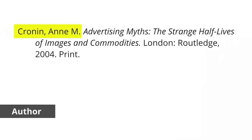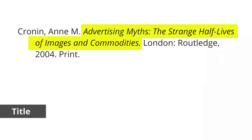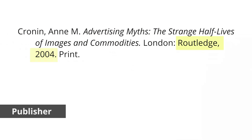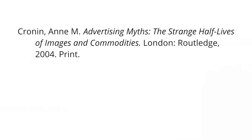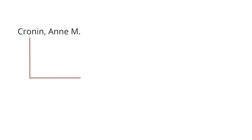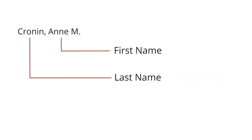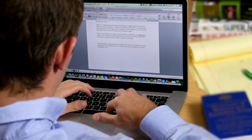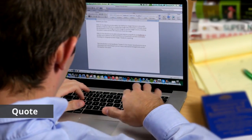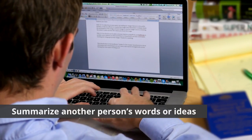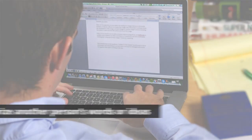Most citations include the following elements: author, title, date it was created, and publisher. Depending on the citation format, you may have to list additional details, and the author's name always appears as last name, first name. It is necessary to provide a citation every time you quote, paraphrase, or summarize another person's words or ideas.